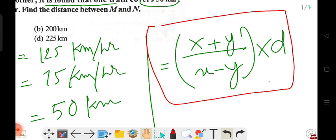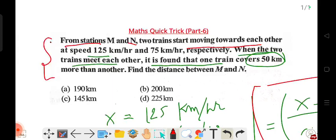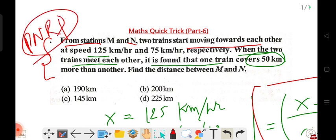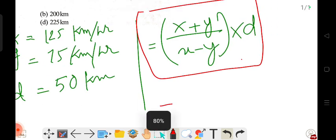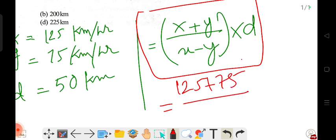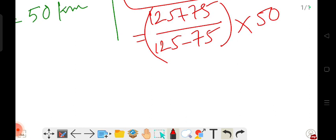Using this formula instead of the traditional time-consuming method: x + y equals 125 + 75, divided by x - y which is 125 - 75, times d which is 50.